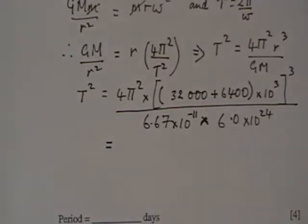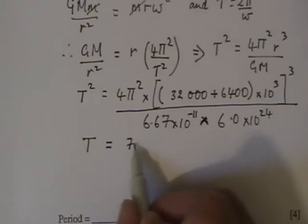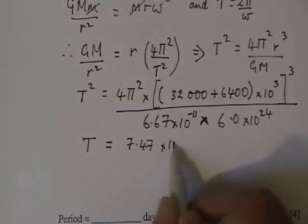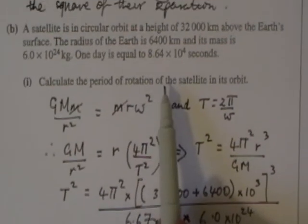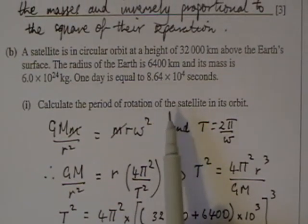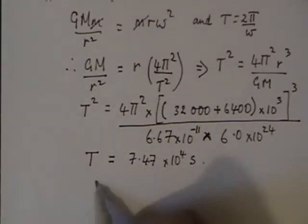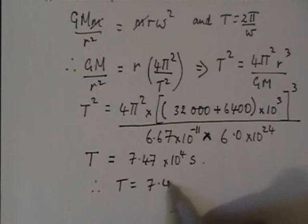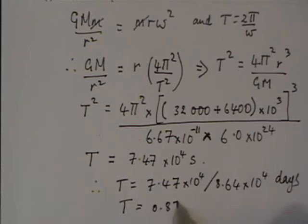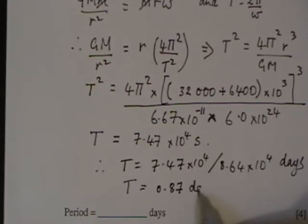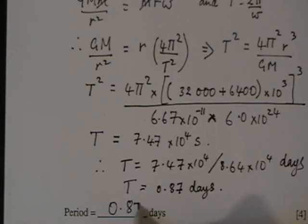Calculating that out gives T equal to 7.47 × 10⁴ seconds. We were told that 1 day equals 8.64 × 10⁴ seconds. Therefore T equals 7.47 × 10⁴ divided by 8.64 × 10⁴ days, which means T is equal to 0.87 days.